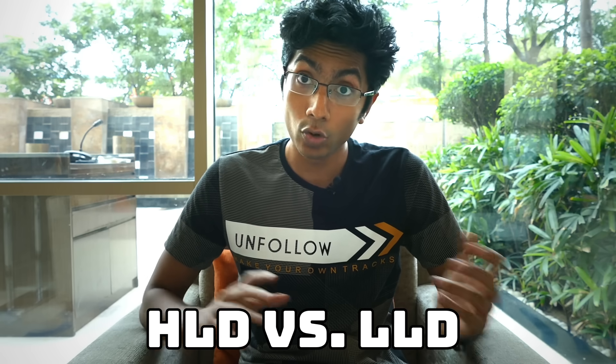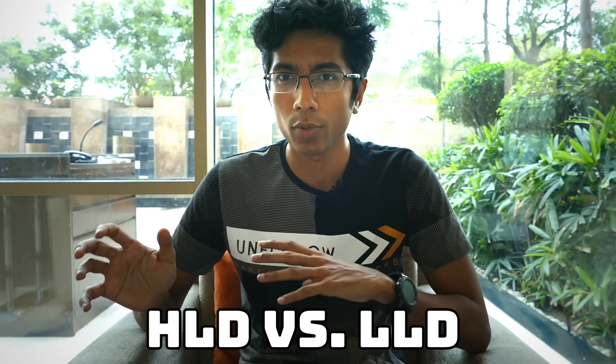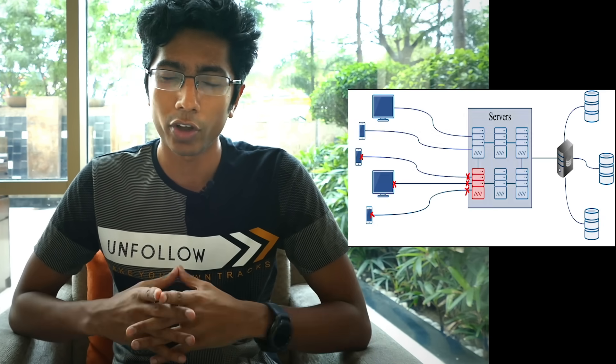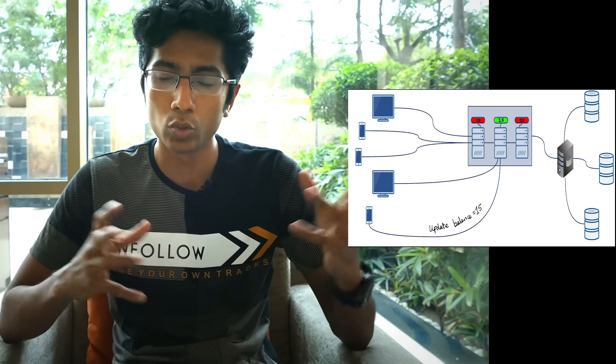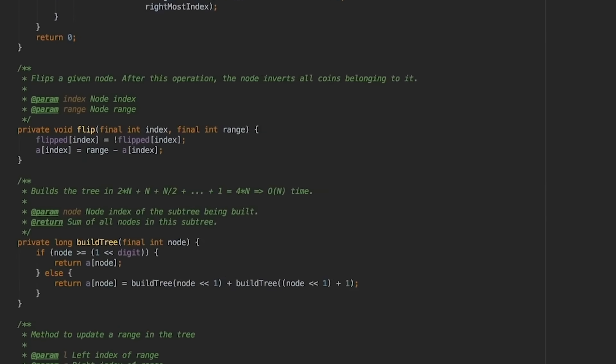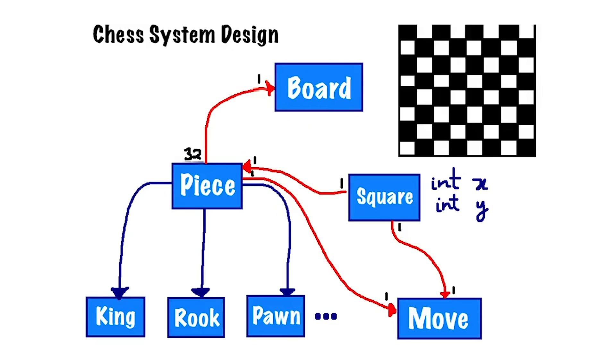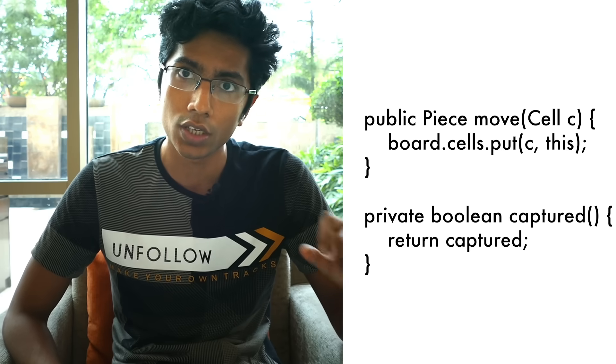The difference between high level system design and low level system design. So high level is what we talk about on this channel. You know, deploying on servers, figuring out how two systems will be interacting with each other. Low level system design has a lot more to do with how you're actually going to code this stuff. Like making classes, making objects, the functions, the signatures. These things are pretty important if you are a senior engineer. And even if you're not, if you want to go to the senior engineering level, you need to know about how do you write efficient and clean code.